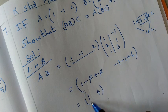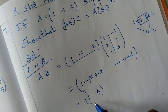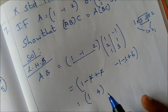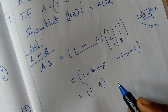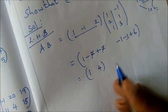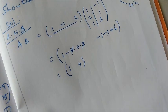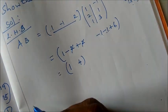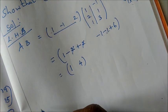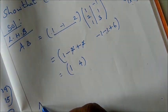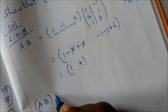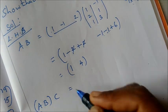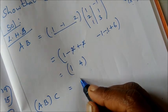Now compute (AB)C. AB is a 1×2 matrix. Next we multiply AB into C. AB is 1 row and 2 columns, C is 2×2, so multiplication is possible, forming a 1×2 matrix.